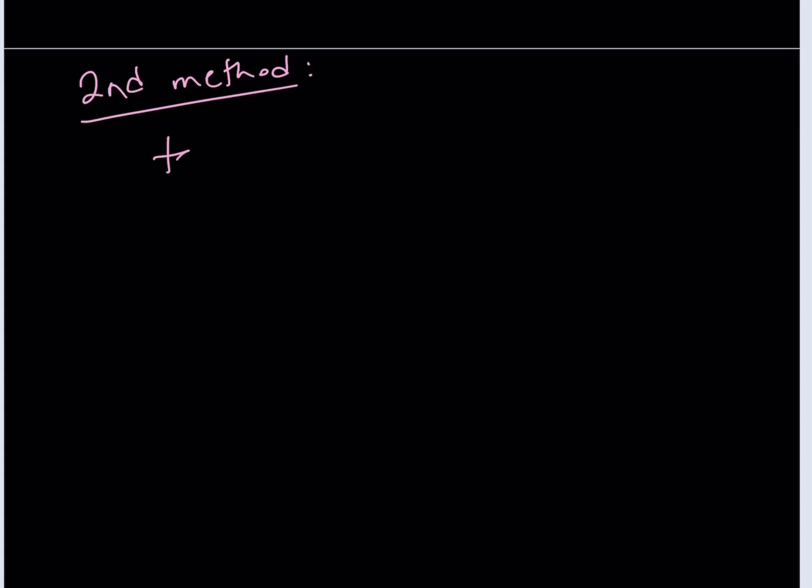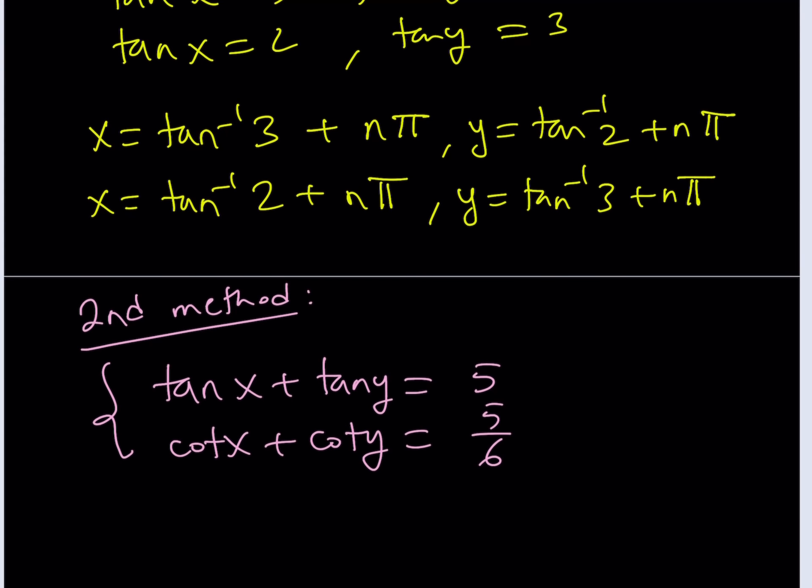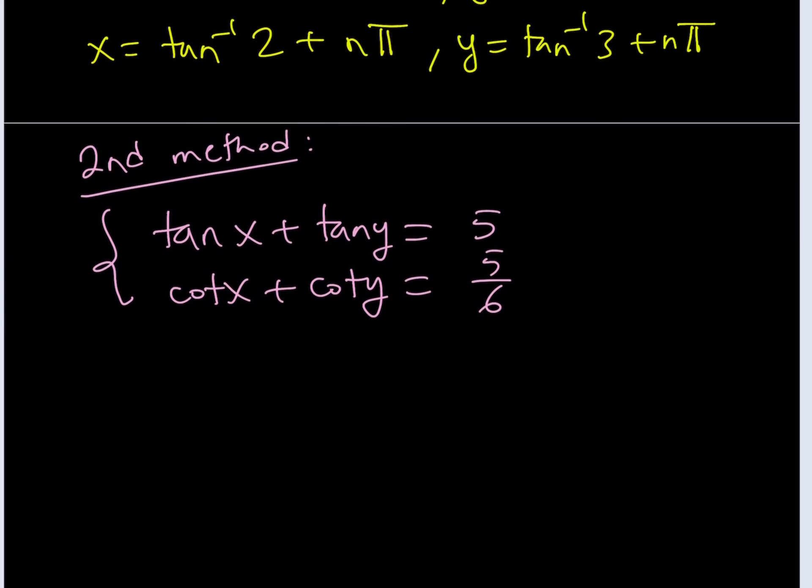Anyway, let's rewrite our system. We have tangent x plus tangent y equals 5 and cotangent x plus cotangent y equals 5 over 6. So that's my system. Obviously, we do have another thing we didn't talk about—these values are going to work because they don't make the equation undefined. With tangent and cotangent, you've got to be careful because tangent is undefined at pi over 2 and 3 pi over 2 and cotangent is undefined at 0 and pi. So we've got to make sure that they work. So they're good.